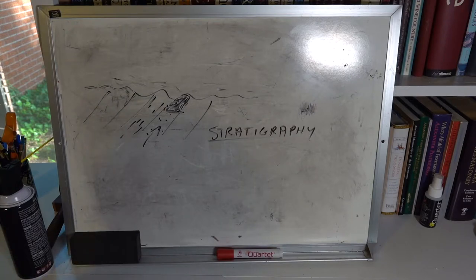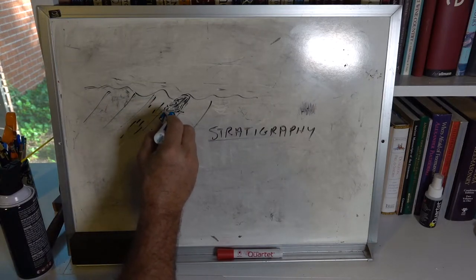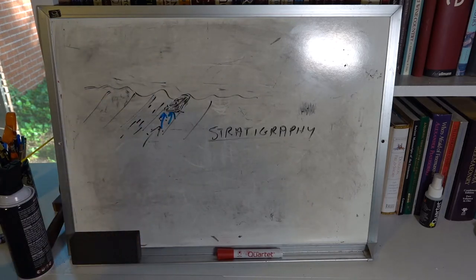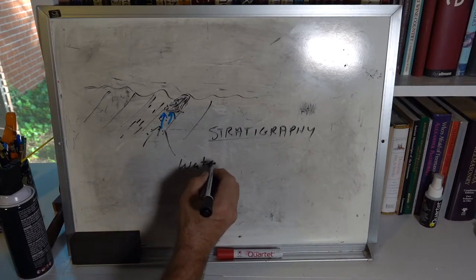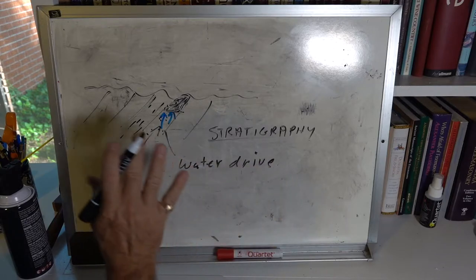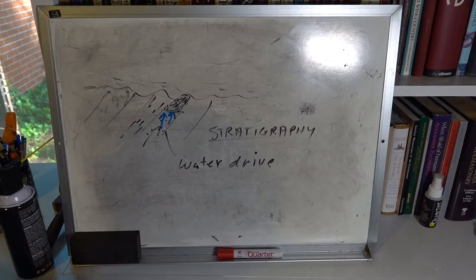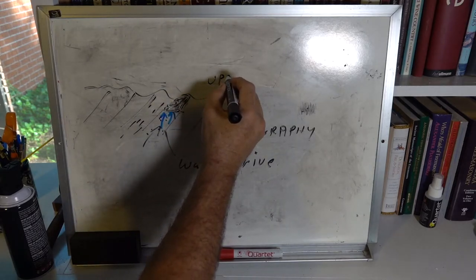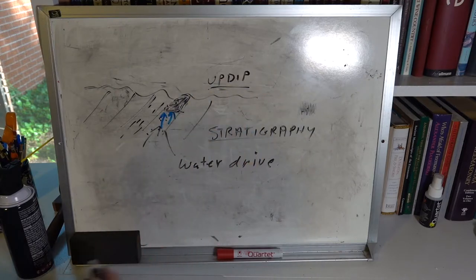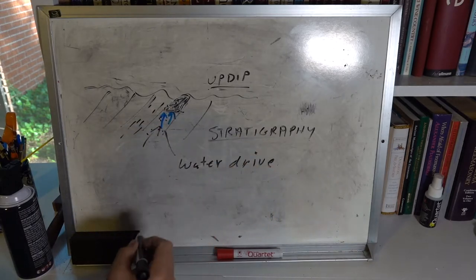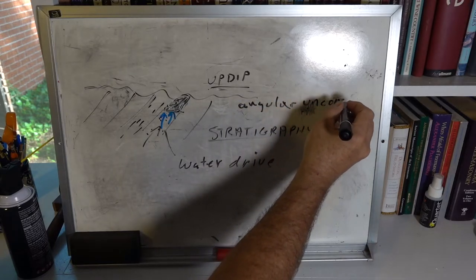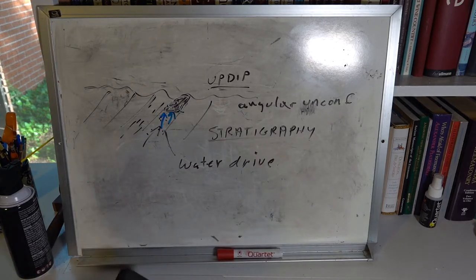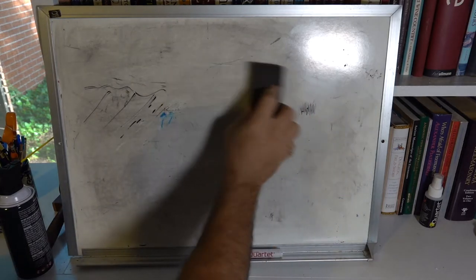The groundwater pushes up on the bottom of the oil, allowing it to accumulate there — the oil simply displaces the water. This is called water drive, where the water displaces the oil upward in the up-dip direction. Oil is lighter of the two and so it moves up-dip. This is a type of structural trap associated with an angular unconformity.